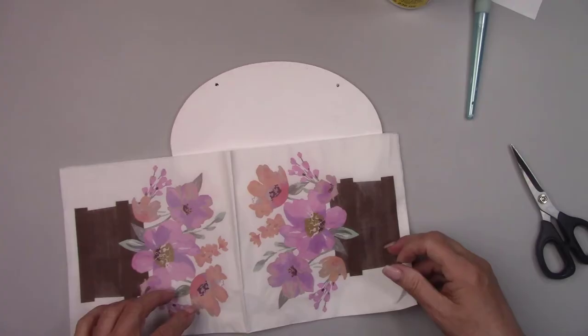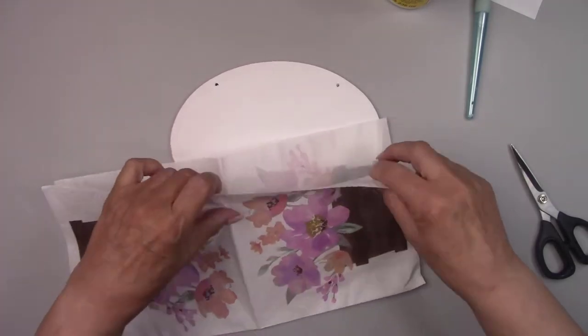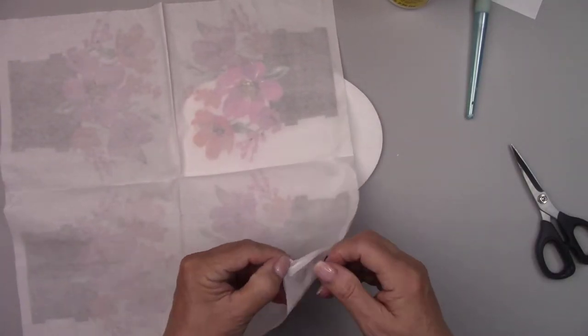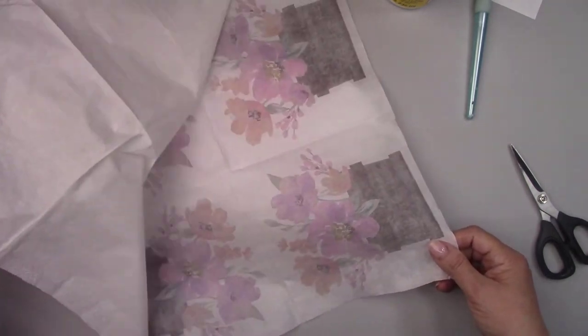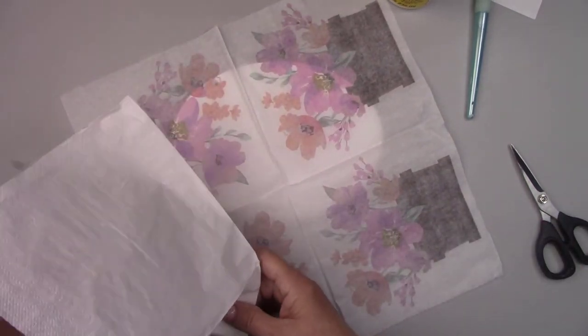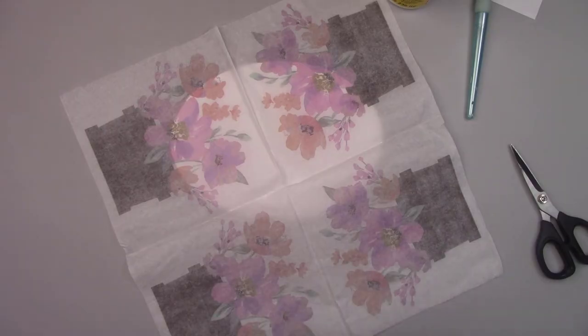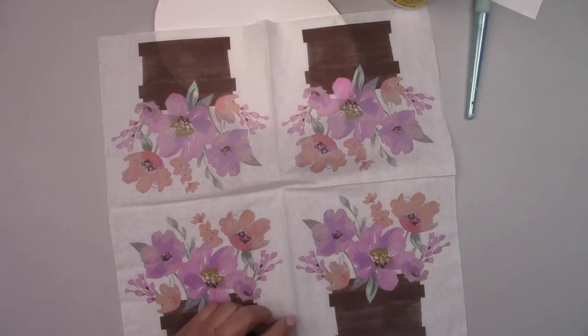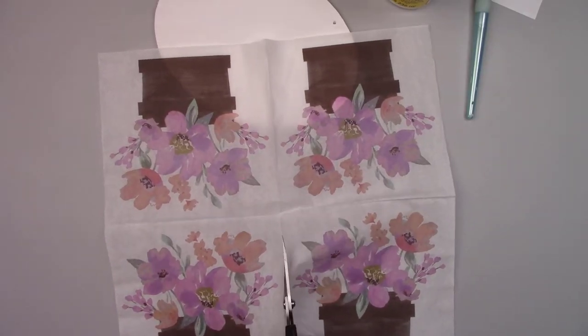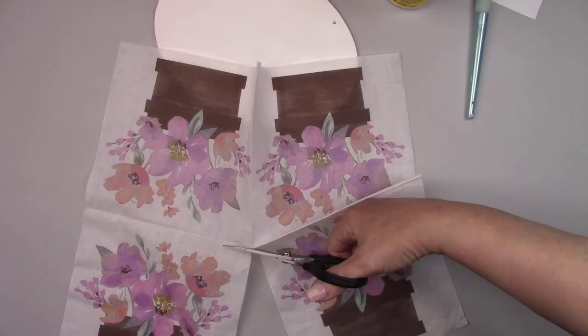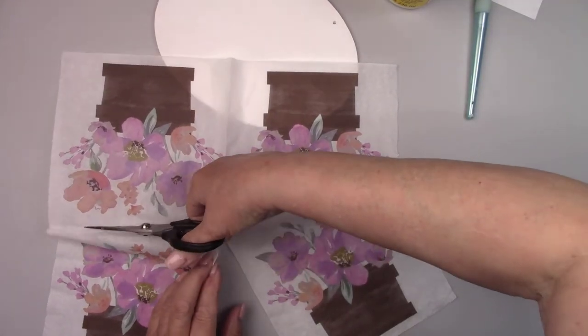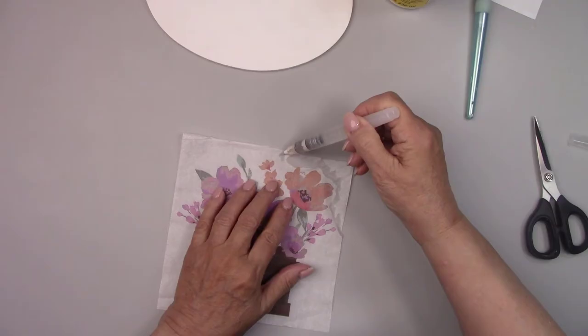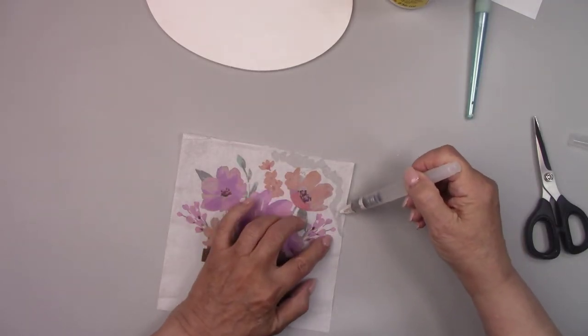I'm separating the layers of the napkin because I'm only going to use the top layer with the picture on it. This napkin has a picture that's repeated four times but I'm only going to use one of the pictures so I'm removing the rest of them. I'm using my water brush to wet the napkin and tear off as much of the background as I can from around the picture.